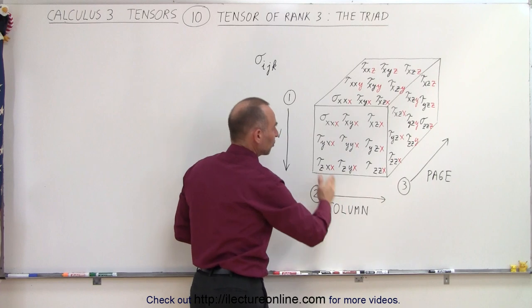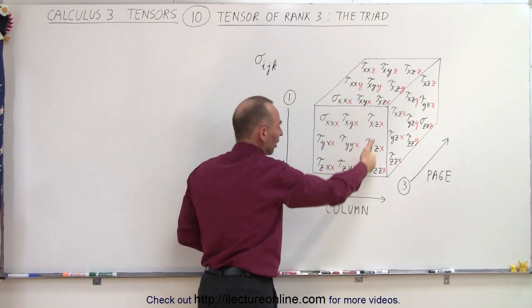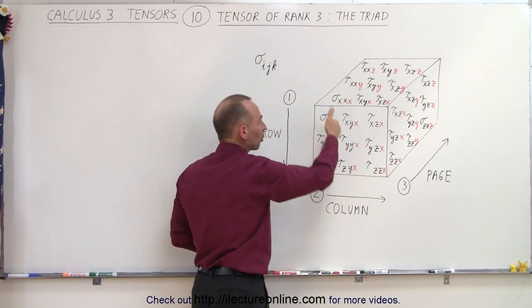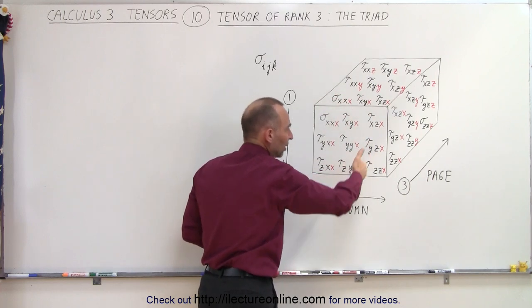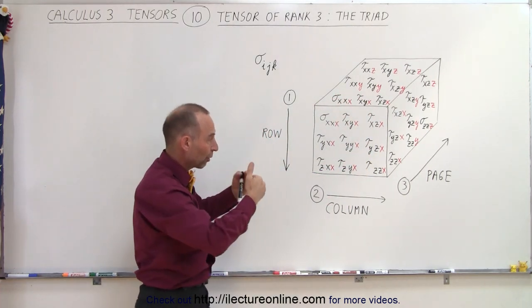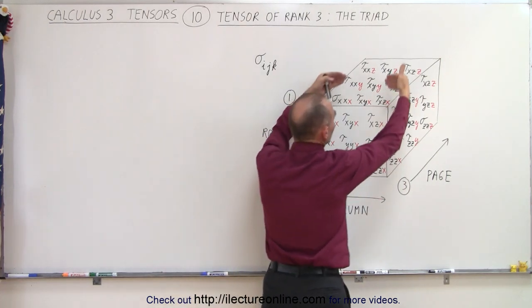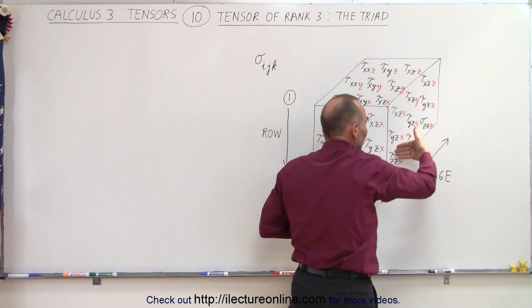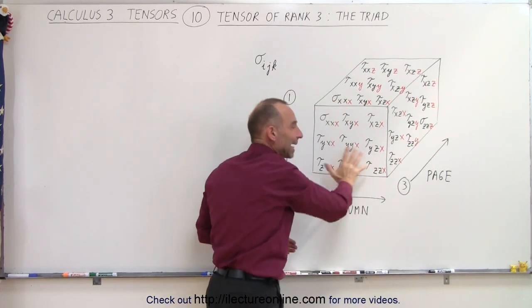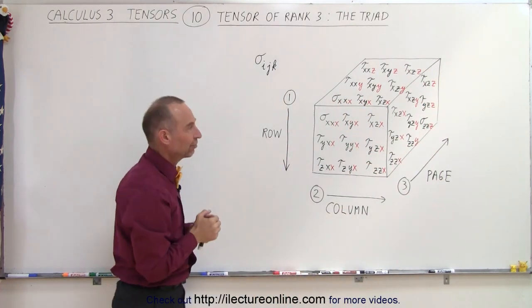The second subscript represents the columns, and so we have column 1, column 2, column 3, or column X, column Y, column Z. And then the third dimension, you work from the front backwards, we call that the page: the first page, the second page, the third page, so there'll be three slices of nine components like that, one after the other.